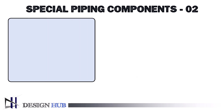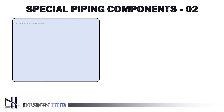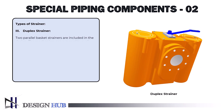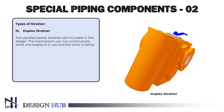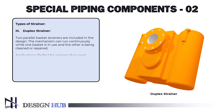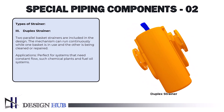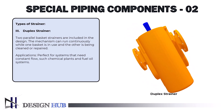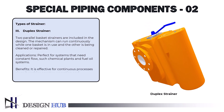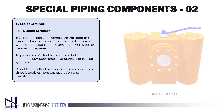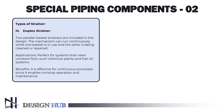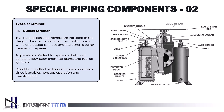The third one is a duplex strainer. Two parallel basket strainers are included in the design. The mechanism can run continuously while one basket is in use and the other is being cleaned or repaired. Applications: perfect for systems that need constant flow, such as chemical plants and fuel oil systems. Benefits: it enables non-stop operation and maintenance, making it effective for continuous processes.